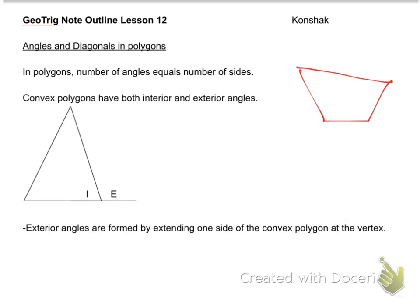That's an example of a polygon. Now we can go into our notes. The first note says in polygons, the number of angles is equal to the number of sides. We'll just take a look at our example. I have one, two, three, four angles or vertices. And I have one, two, three, four sides. They are equal.